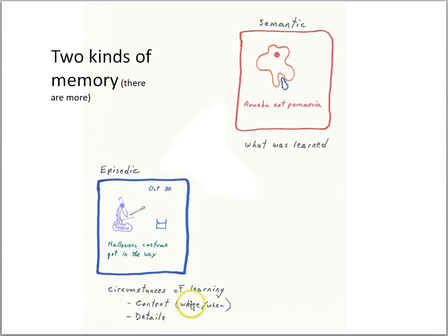There's a certain context: where you were in a classroom, when it was October 30, the details—you were wearing a Halloween costume, you were looking at amoeba and paramecia. These are all the pieces of information that could be called up in an episodic memory.